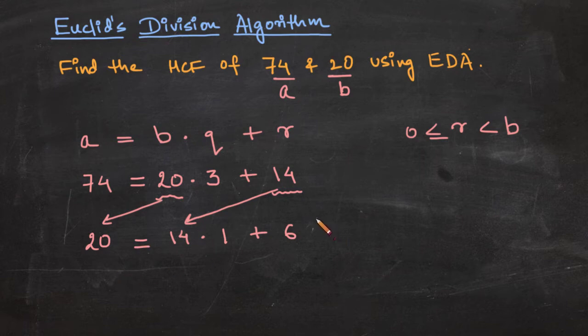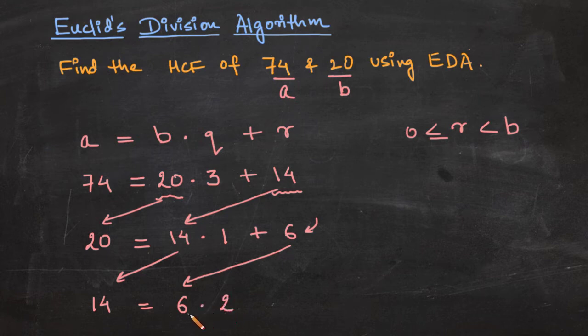So now we have reduced the gap to 6 and 14. So still we don't have remainder as 0, so we would continue this Euclid's division lemma now for 14 and 6. So 14 would be our a now and 6 would be our b. So 6 ones are 6, 6 twos are 12, 6 threes are 18, so let's take two steps 6 units long. This would help us reach 12 plus 2, so now we would reach 14.